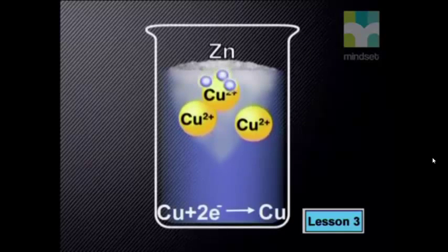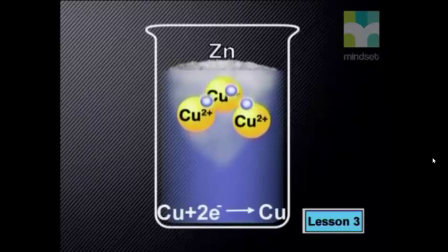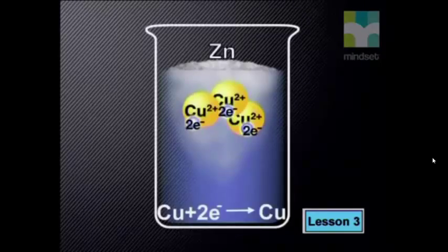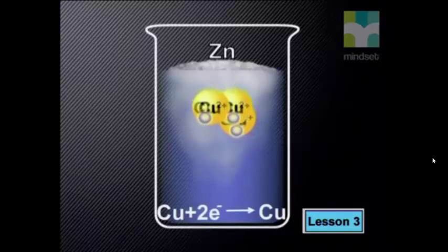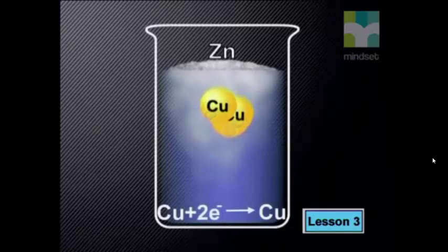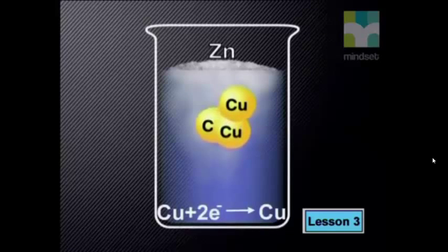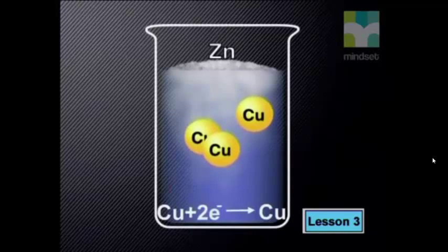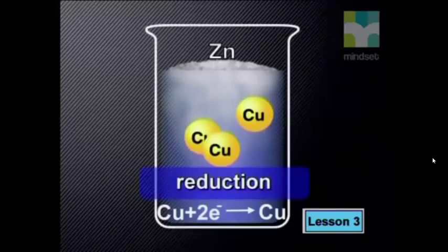At the start, the copper ion was poor in electrons and thus had a positive charge of +2. During the reaction, it gained two negatively charged electrons, reducing its positive charge and bringing it to a neutral state. So two electrons are added to the copper ion in the chemical equation to form a copper atom. When the oxidation number decreases or reduces like this, becoming more negative, we call the process reduction.